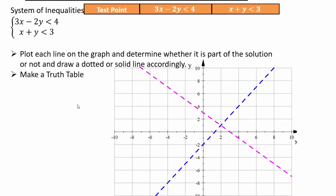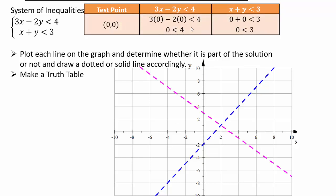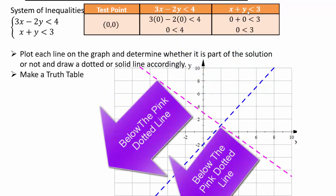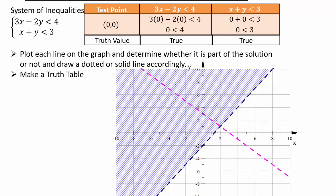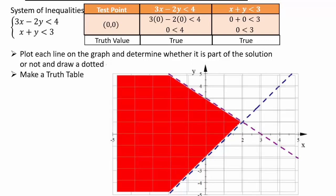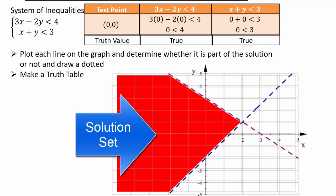Make a truth table using the test point (0, 0). For the blue line: 0 less than 4 is true, so the solution is everything above the blue line. For the pink line: 0 less than 3 is true, so the solution is everything below the pink line. The solution set is the intersection of both shaded regions. Example solutions in that region include (−2, 0) and (−4, 2) — there are infinitely many solutions.